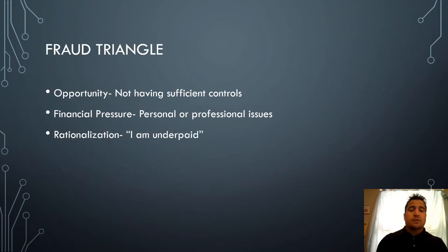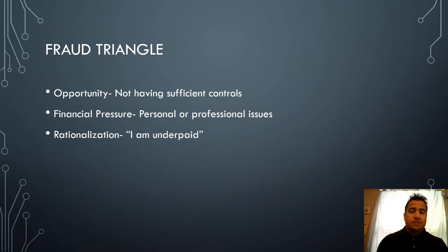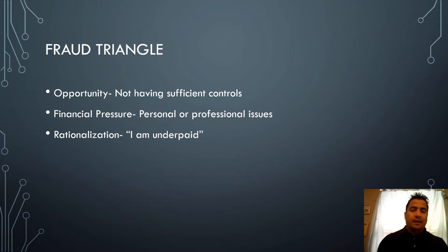The fraud triangle relates to factors that can lead to theft within a company. Opportunity arises from insufficient controls — for example, if one accountant both reconciles the books and cuts the checks, they could generate false paperwork paying a fictitious company while actually cutting a check for themselves. You need controls where jobs are separated from each other so people cannot steal from you, removing the opportunity.